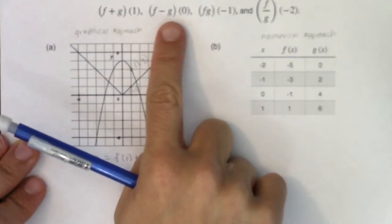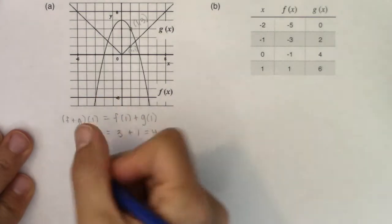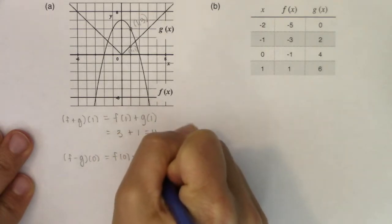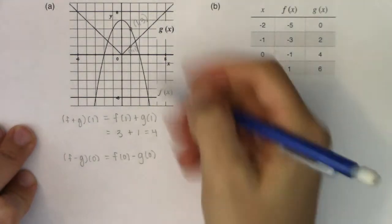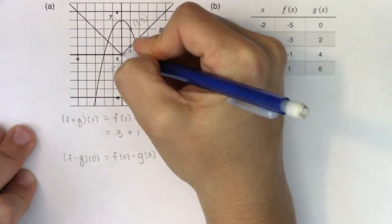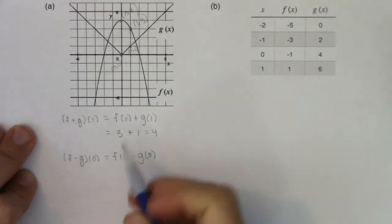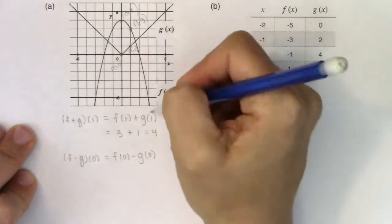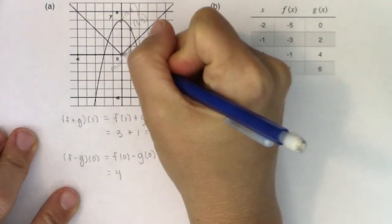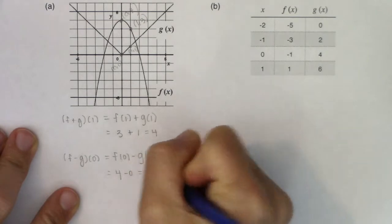Now we want f minus g at zero. The difference function gives us f of zero minus g of zero. My x coordinate is zero, and I can see two ordered pairs here. For f of zero, I hop onto the parabola — the y value there is four. For g of zero, I'm on the absolute value function and at zero the y value is zero. So this is four minus zero, which is four.